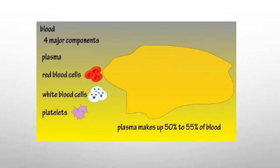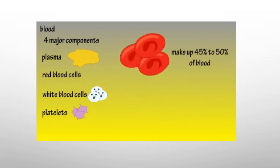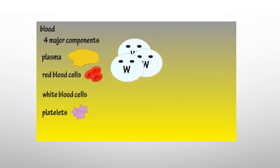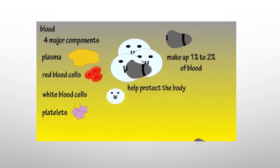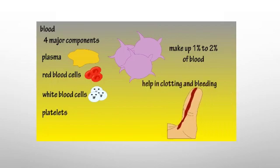What is blood? Blood is made up of four major components: plasma, red blood cells, white blood cells and platelets. Plasma makes up about 50-55% of blood; its main contents include water, which makes up about 90% of plasma, glucose, hormones, enzymes, proteins, minerals and various waste products. Red blood cells make up about 45-50% of blood and their primary function is to carry oxygen to cells and deliver carbon dioxide to lungs. White blood cells make up 1-2% of blood and help protect the body against disease and invaders. Platelets make up 1-2% of blood and are involved in clotting and preventing bleeding.